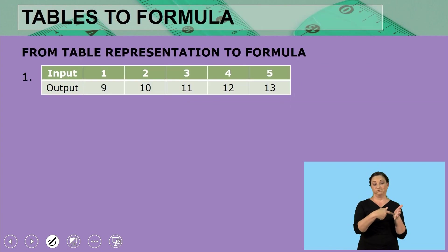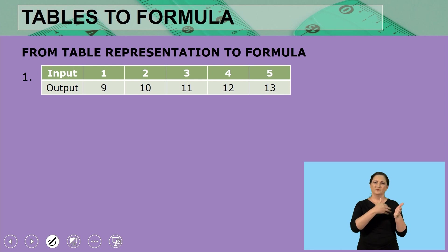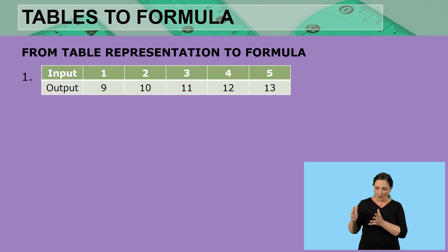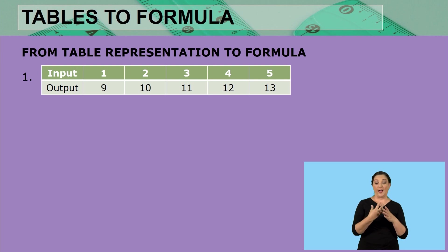We are given the following table. This table has input values and output values. Remember, connecting it to our number patterns, the output values are going to give us a certain pattern. We are going to see how we move from the first output value to the second, and again from the second to the third.